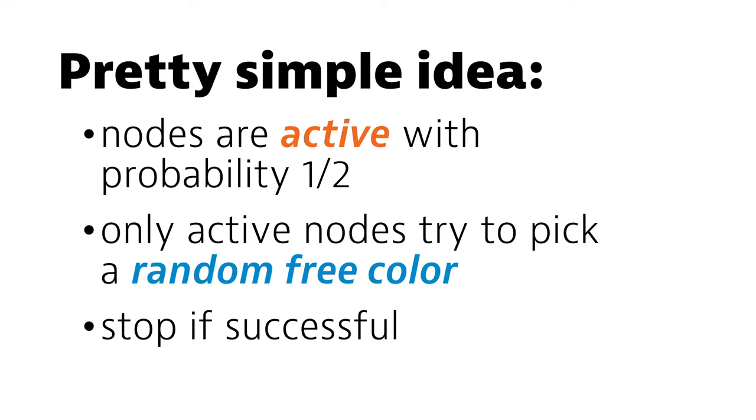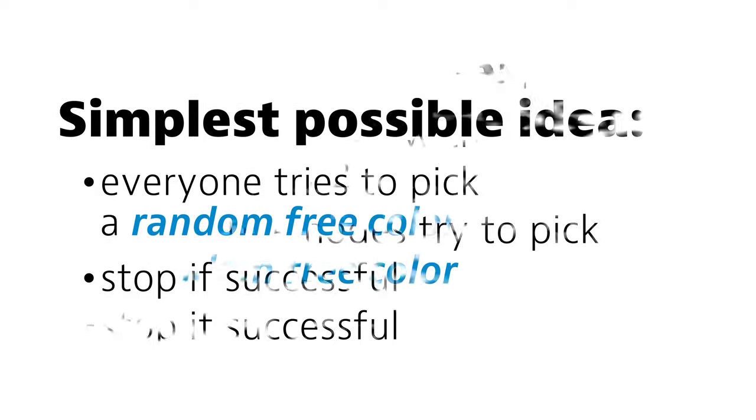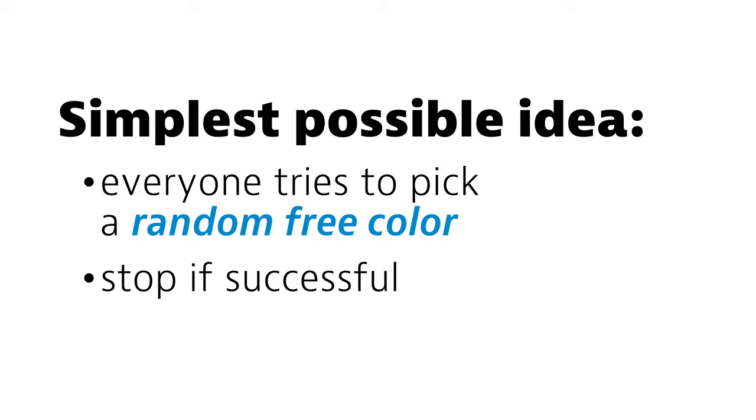So the key element was this: flip coins to decide if you are active, and then pick a random free color. Now I recommend that you go back to this earlier algorithm idea that I showed first, where everyone is active. What would happen if you tried to do exactly the same analysis for this algorithm? What kind of a running time would you get?